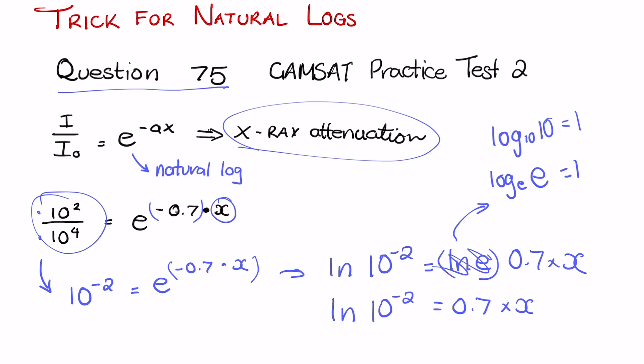Now the trick here with the natural log is to change it to something that we're more familiar with, and that is log 10. So in order to do this with these ln values here, all you have to do is times a natural log by 2.3. So instead of being natural log 10⁻², it could be 2.3 × log₁₀(10⁻²) equals -0.7×x.